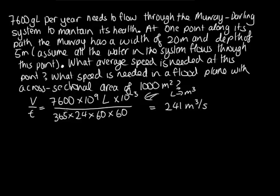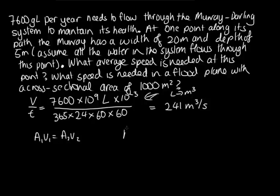So we know that this flow rate is constant because we've got A₁V₁ equal to A₂V₂. This flow rate AV is just equal to the volume of the water over the time.